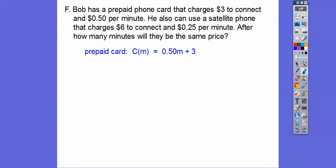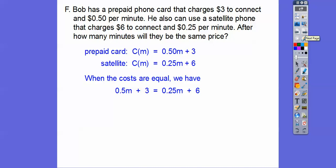So the prepaid card is $3 to connect and 50 cents a minute, and then the satellite card is going to be, and this is the cost per minute. That's why it's C of M. It's a function. The cost per minute is $0.25 a minute with a $6 charge. And when are they going to be the same? We had a textbook that made us build a table, and then I showed a shortcut. We just set these two equations equal to each other, and so when they cost the same, we just set them equal to each other and solve for M.